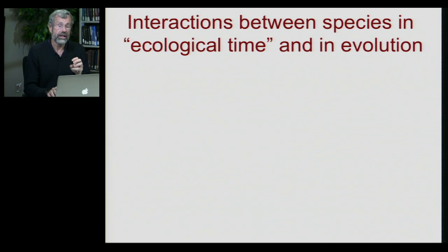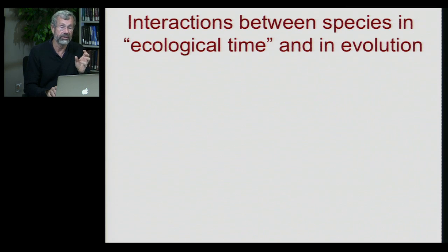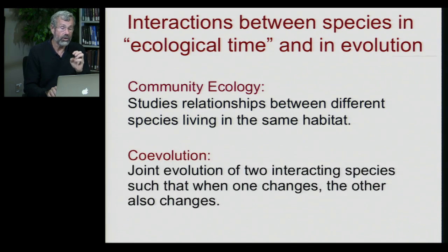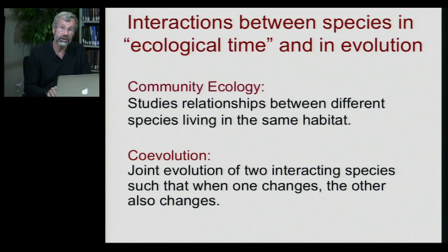When we look at interactions between species, we want to divide our attention to two different time intervals. First is ecological time, and then also evolutionary time. In community ecology, we'll be looking at relationships between different species living in the same habitat. We'll also be thinking about coevolution, which is the joint evolution of two interacting species, so that if one species changes, the other will too.